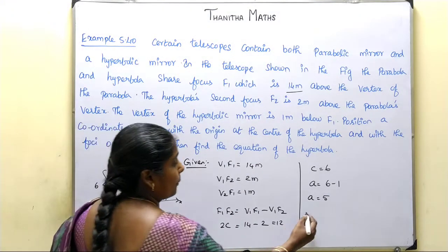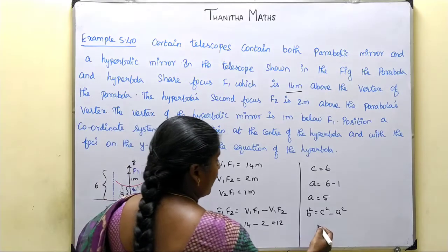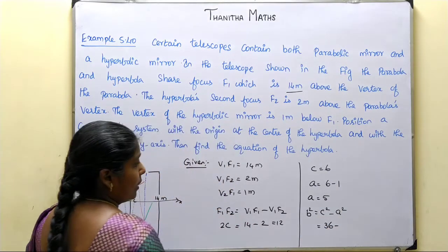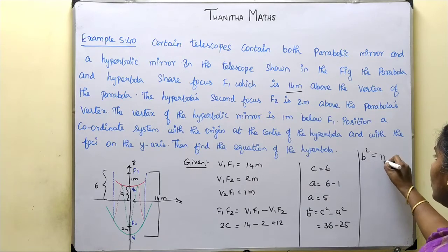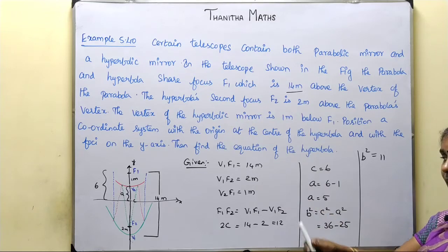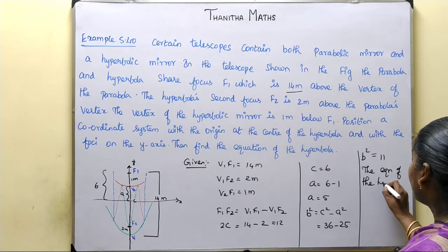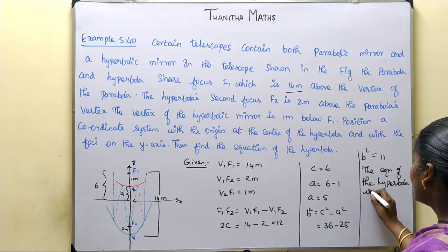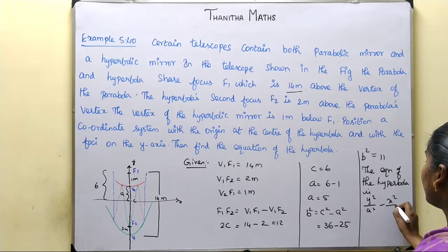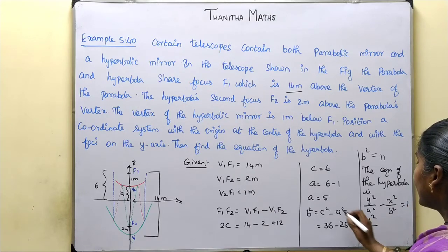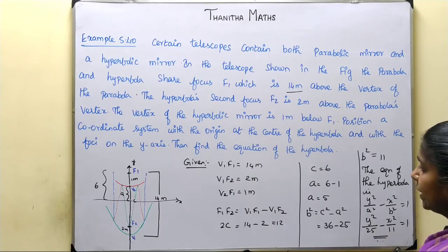Now we use the formula: b squared equals c squared minus a squared. Substituting: b squared equals 36 minus 25, so b squared equals 11. Since the transverse axis is on the y-axis, the equation of the hyperbola is y squared over 25 minus x squared over 11 equals 1. This is our required equation.